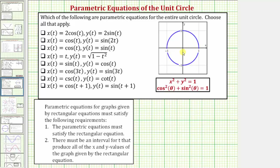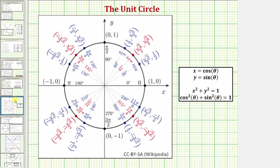There are a couple things you need to remember about the unit circle before we answer this question. First, the rectangular equation for the unit circle is x squared plus y squared equals one. Also, in trigonometry we learned that for any point on the unit circle, the x-coordinate equals cosine theta and the y-coordinate equals sine theta. By performing substitution into the rectangular equation, we get the trigonometric identity cosine squared theta plus sine squared theta equals one. We'll use these two equations to help us answer this question.